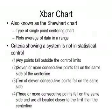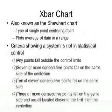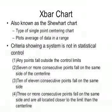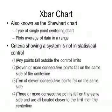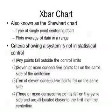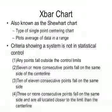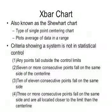The X-bar chart, also known as the Schwart chart, is a type of centering chart which plots the average of the data in a range. You can determine if the system is in statistical control simply by looking at the chart. If any of the following criteria are true, the system is not in statistical control: any points fall outside the control limits; 7 or more consecutive points fall on the same side of the center line; 10 of 11 consecutive points fall on the same side; or 3 or more consecutive points fall on the same side and are all located closer to the limit than the center line.